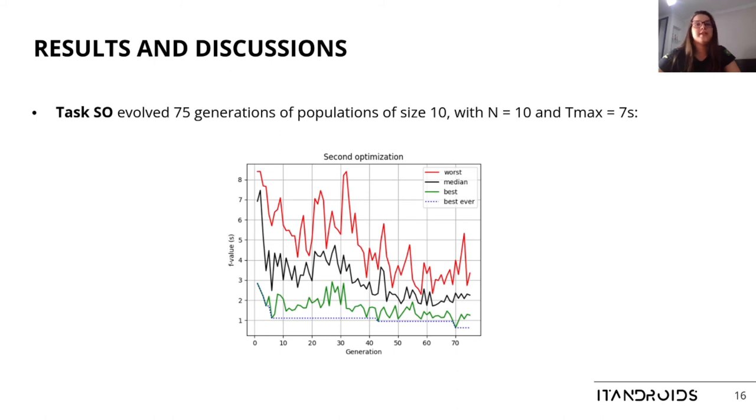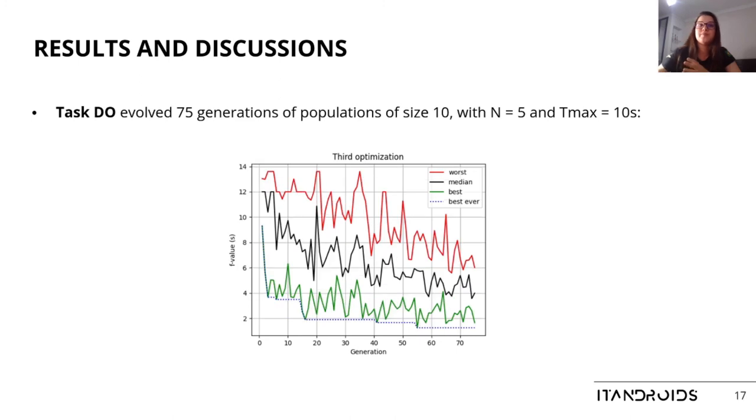Task static opponents evolved 75 generations of populations of size 10, with N equals 10 and T max equals 7 seconds. The best ever fitness value was around 0.63 seconds, a slightly longer time frame than the last task, which we expected given the increased task difficulty.